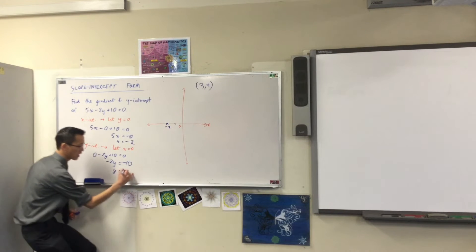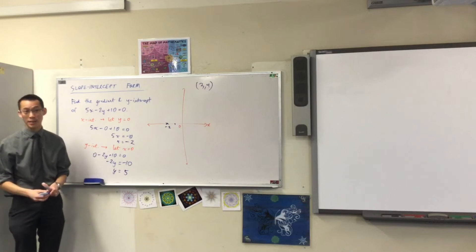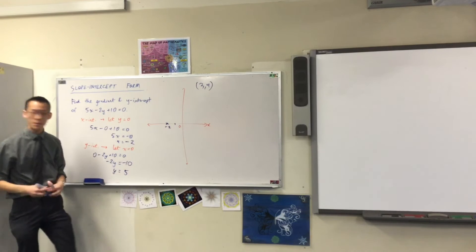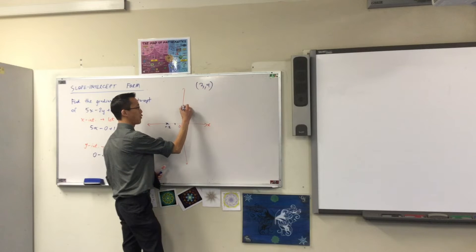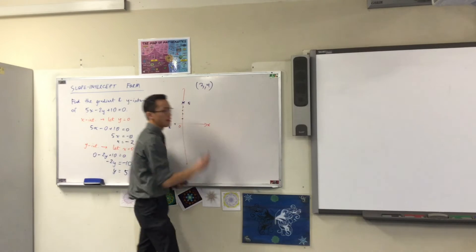So, if I divide by negative 2, you just get positive 5 over there. The negatives cancel. So, again, I'm going to come back to my diagram. I'm going to go 1, 2, 3, 4, 5. That's where I'm going through.